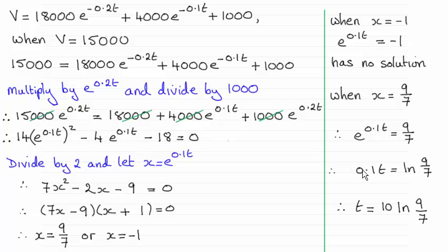And then if I multiply both sides by 10, you can see I end up with that exact result then for t. t equals 10 times the natural log of 9/7.